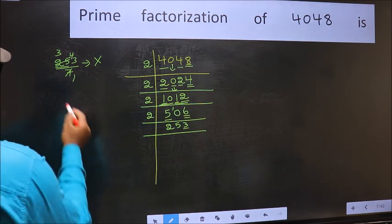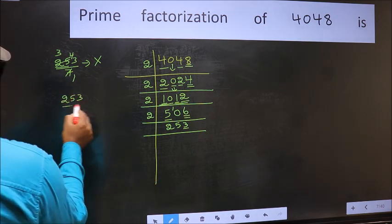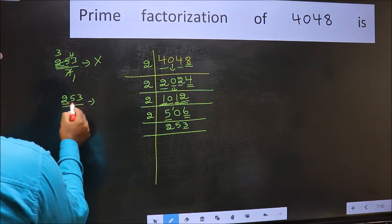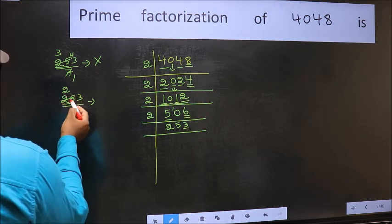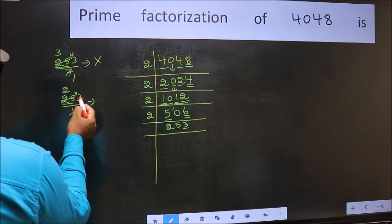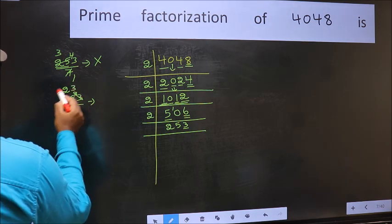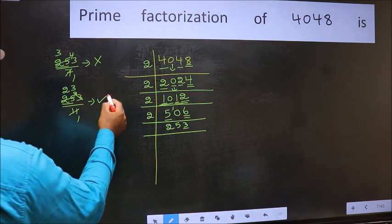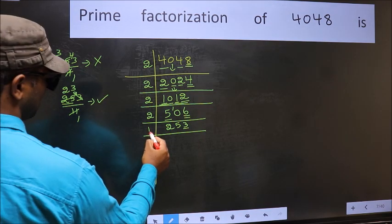Next prime number 11. A number close to 25 in the 11 times table is 11 times 2 is 22. 25 minus 22 is 3, carried forward: 33. When do we get 33 in the 11 times table? 11 times 3 is 33. No number has been left out, so this is divisible by 11.